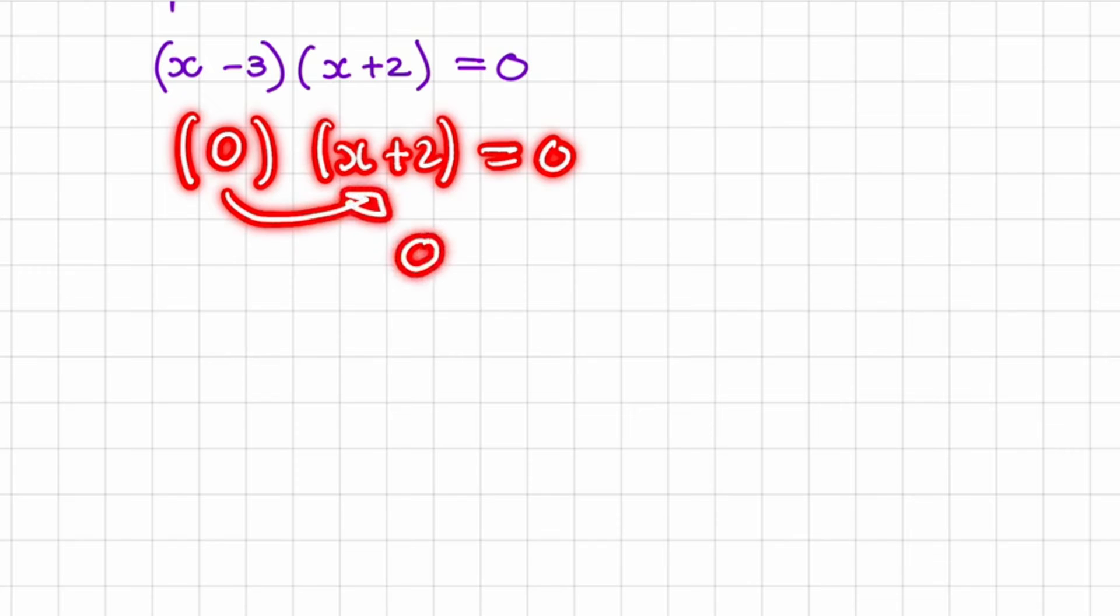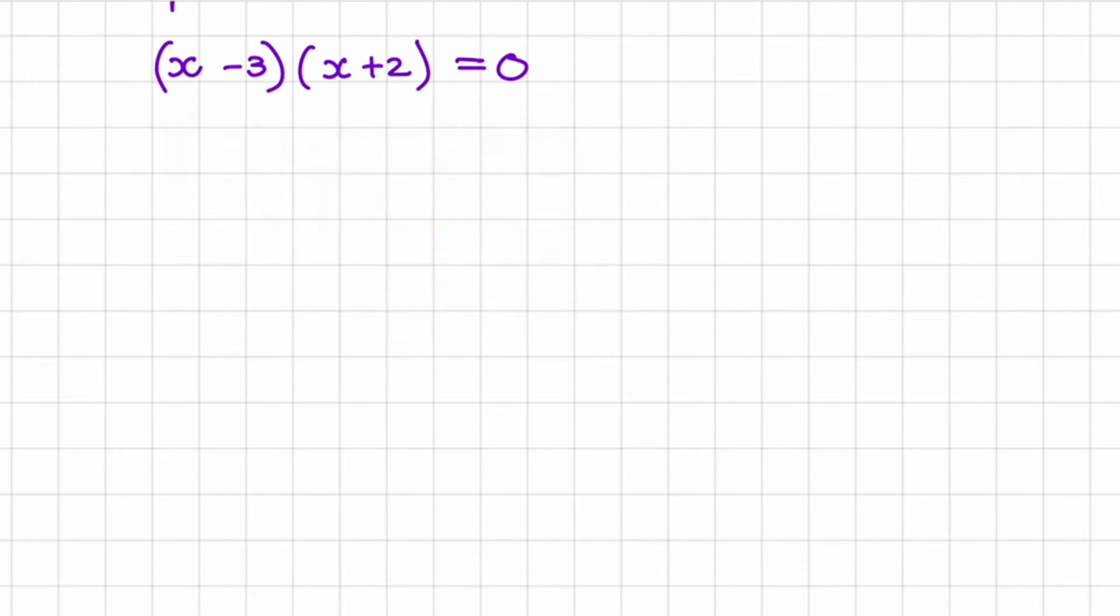So the left hand side would be 0 and the right hand side would be equal to 0. Therefore we would have satisfied the equation. What it means to satisfy the equation is to make the left hand side equal to the right hand side.